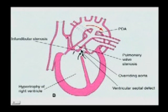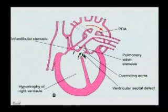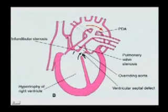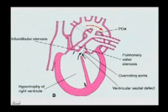Here again we see the tetralogy — pulmonary stenosis, right ventricular hypertrophy, overriding aorta or dextral position of the aorta, and the ventricular septal defect. Here we can see some of the blood flow, and this will help to explain the right ventricular hypertrophy.